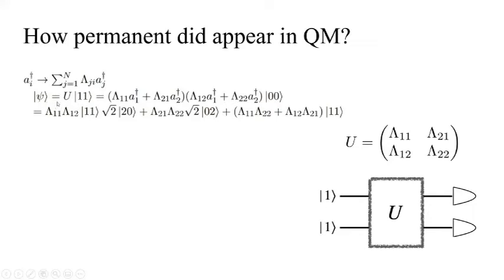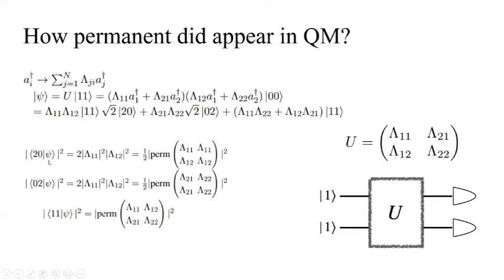We can directly compute this wave function after the circuit. After a simple computation, we get some terms related to one-one, zero-two, and one-one states. We get our two-zero amplitude, which is exactly half of the permanent of lambda [1,1; 1,2]. Another is zero-two, which is [2,1; 2,2]. And one-one is [1,2; 2,1]. You can see that permanent naturally shows up in quantum mechanics.